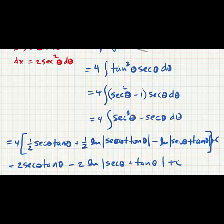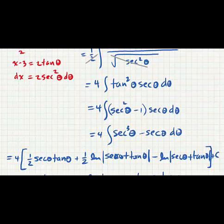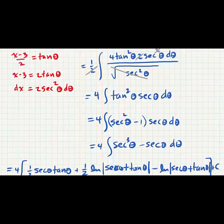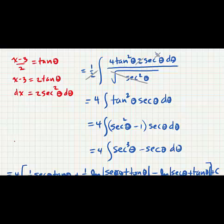Now we need to convert back to x's. Let's go ahead and look at our let statement up here. Our let statement says that tan(θ) is (x - 3)/2. So let's draw a triangle. Put θ in the corner.